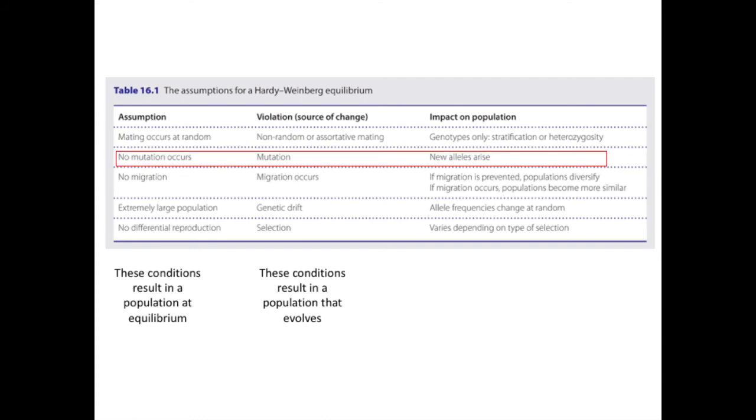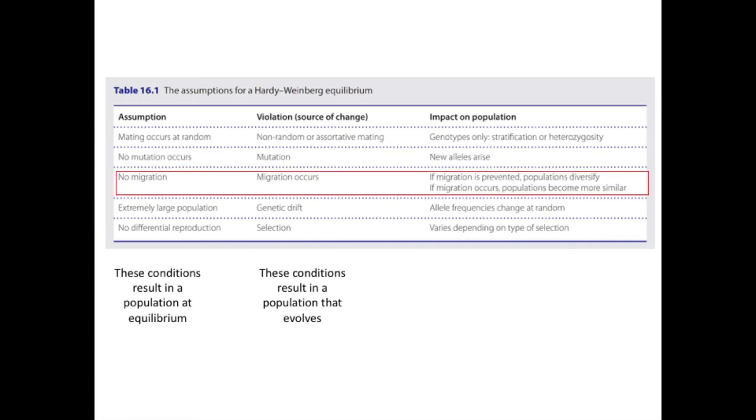There is no evidence for this allele elsewhere in the world, suggesting that the mutation arose in an ancestor and that probably due to the remote location of the Solomon Islands was limited to this population. There has been very little migration to or from the islands.